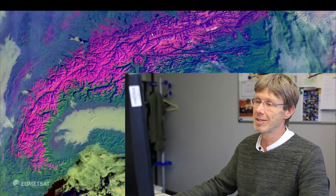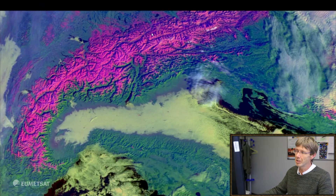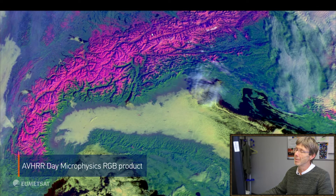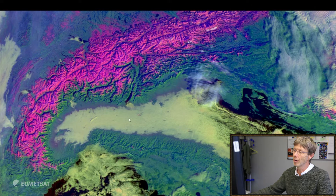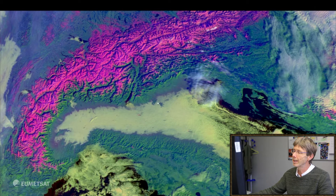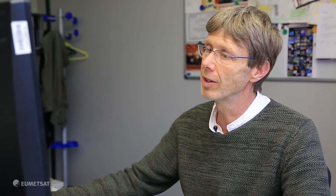The first case is a daytime situation over northern Italy and the Alps. You can see this is a METOP AVHRR image in the morning — it's a day microphysics RGB image which gives colors for different features. The low clouds in the northern Po Valley can be seen by this whitish-yellowish color, which is a freezing fog situation. The Alps are pretty cloud-free, very cold and snow-covered, as seen in this pinkish color.